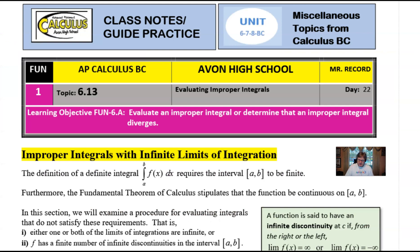So here we are with the front page of our notes for what I call Unit 678 BC, the miscellaneous topics from those three units in the CED that pertain only to calculus BC. And so Topic 6.13, entitled Evaluating Improper Integrals, is going to start by mentioning a few things about our good friend, the fundamental theorem of calculus. If you remember, a definite integration problem, the one that looks kind of like what I've got here in my notes, the integration of f(x) from a to b, requires that that particular interval, a to b, to allow our function to be very well-behaved, and we need this to be finite. Furthermore, that fundamental theorem of calculus stipulates that this function that we graph must be continuous on the interval a to b.